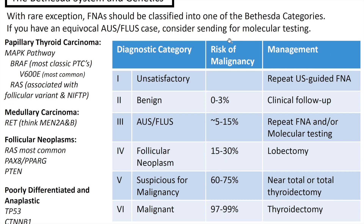We're going to finish up by going over the Bethesda system and genetics for thyroid neoplasms. With rare exception on FNAs, you should be able to classify them into one of the Bethesda categories. For equivocal AUS or FLUS cases, consider sending for molecular testing. Category 1 is unsatisfactory — it doesn't meet the adequacy criteria of 6 groups of 10 well-visualized follicular epithelial cells, or abundant colloid, inflammation, or atypia — and management is to repeat the ultrasound-guided FNA.